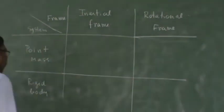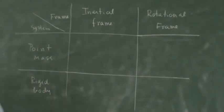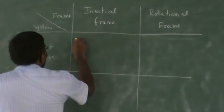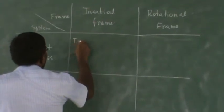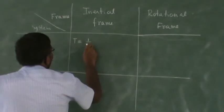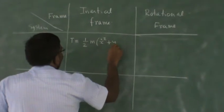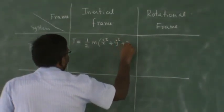So if I have a point mass with x, y, z coordinates, then the kinetic energy of a point mass system in the inertial frame is obtained as half m into (x dot squared plus y dot squared plus z dot squared).